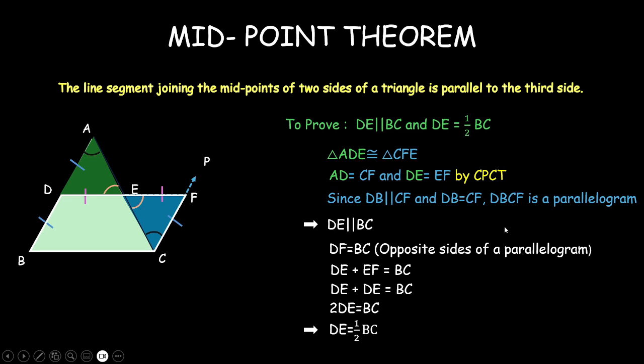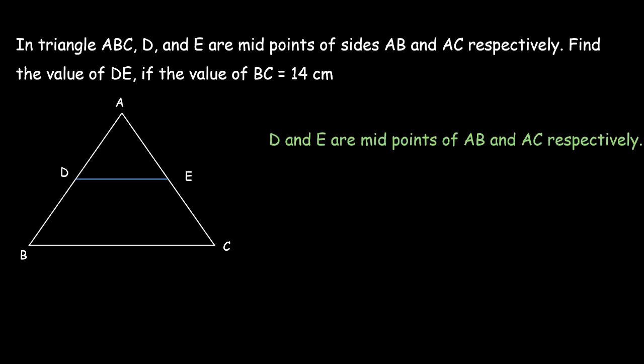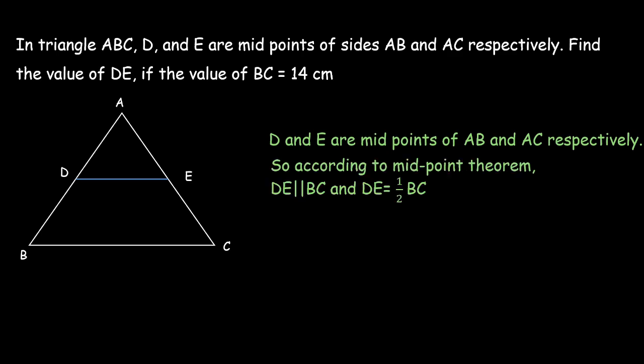Let's do one question based on this. We are given triangle ABC where D and E are the midpoints of sides AB and AC, and BC is given as 14 centimetres. We need to find DE. Since D and E are the midpoints of AB and AC respectively, we can use the midpoint theorem: DE will be parallel to BC and equal to half of BC. BC is 14, so DE is half of 14, that is 7 centimetres.